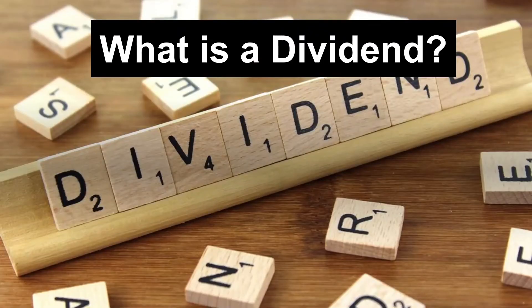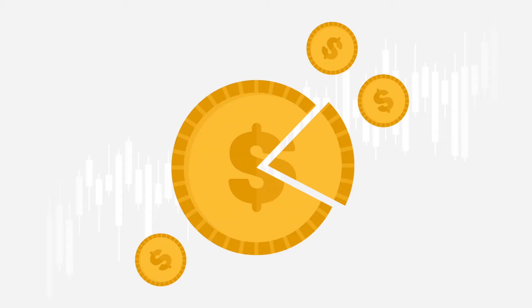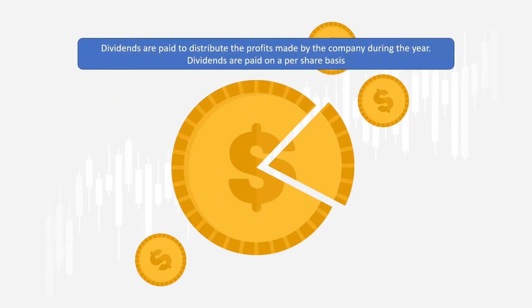Hello everyone. In this video we will discuss what is dividend and why companies give dividends. Dividends are paid by the company to its shareholders to distribute the profits made by the company during that particular financial year, and dividends are paid on a per share basis.